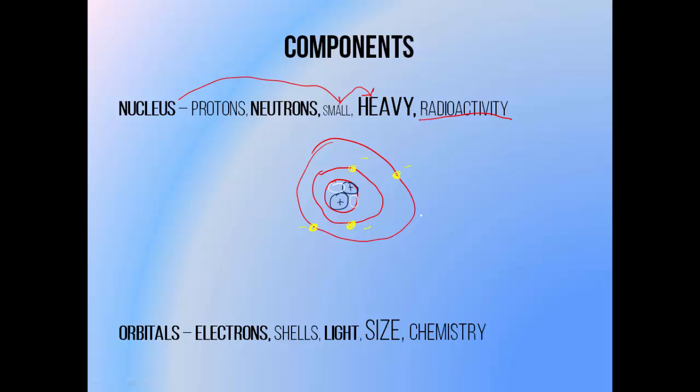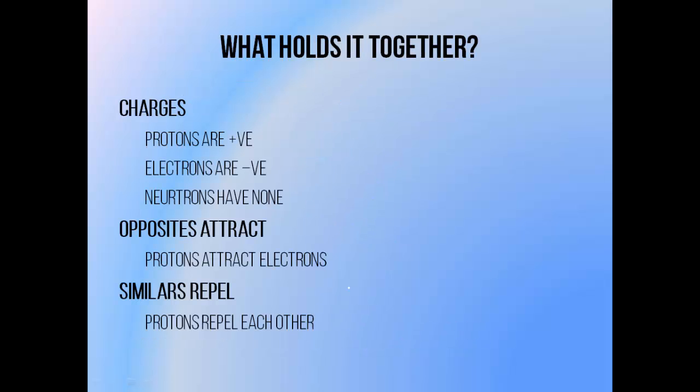Electrons don't contribute very much to an atom's mass, but their shells do take up a lot of room, so they're responsible for most of an atom's size. And the arrangement of electrons around a nucleus determines an atom's chemical properties, since chemistry is basically the study of how atoms pass electrons back and forth.